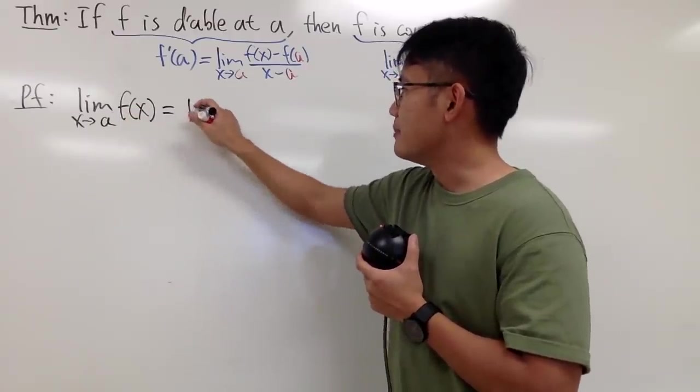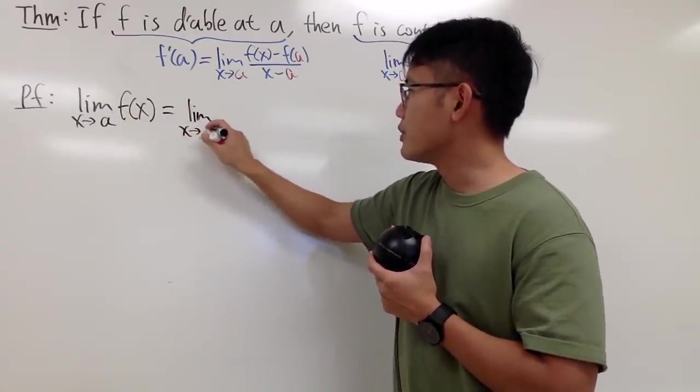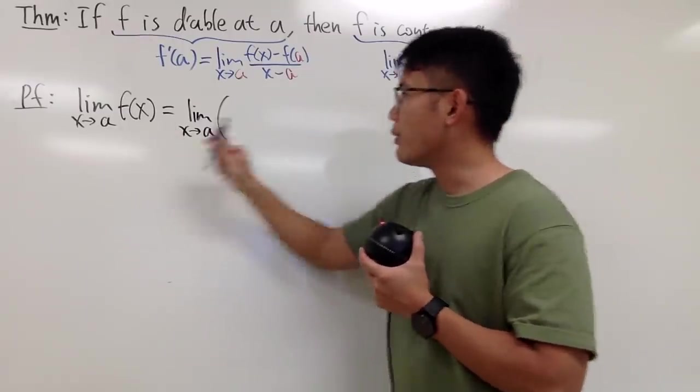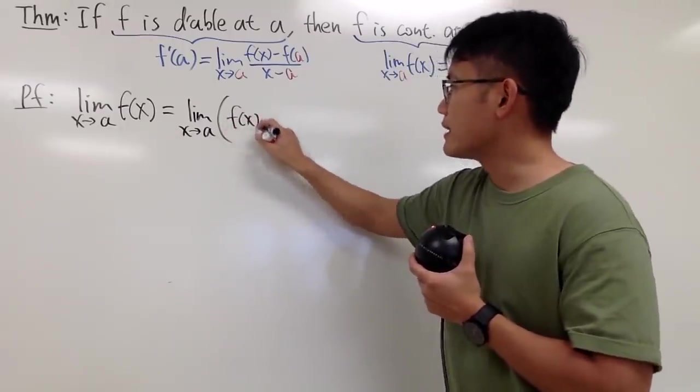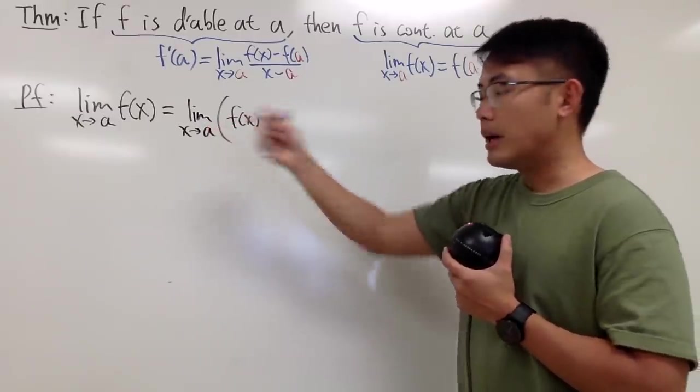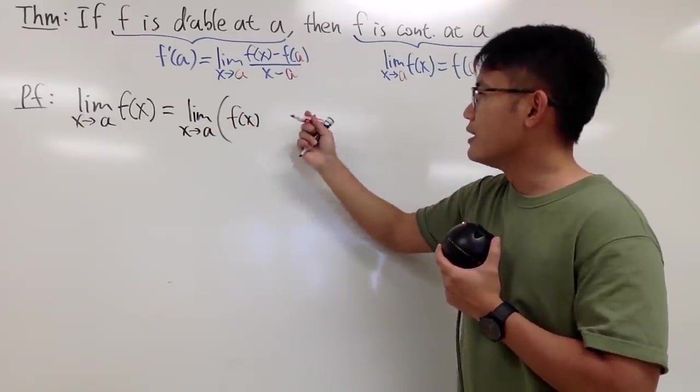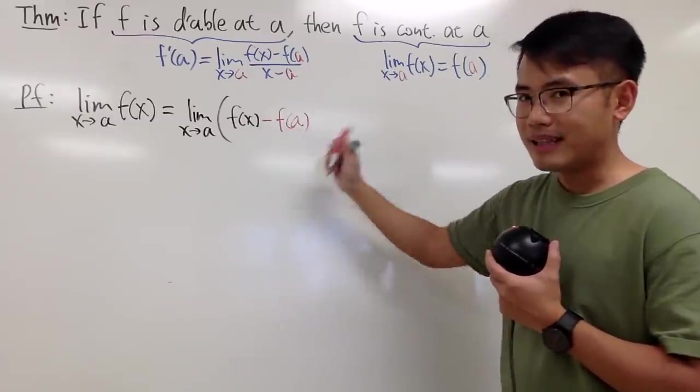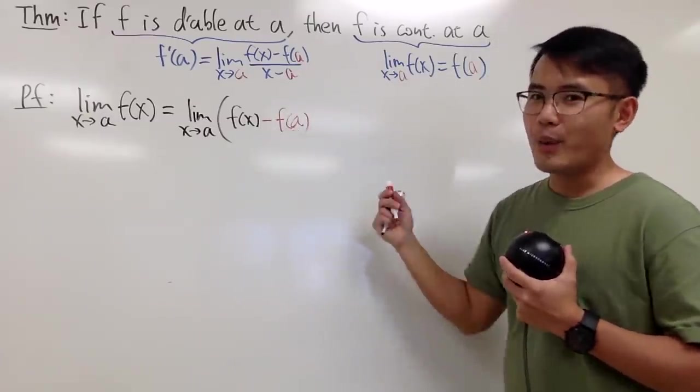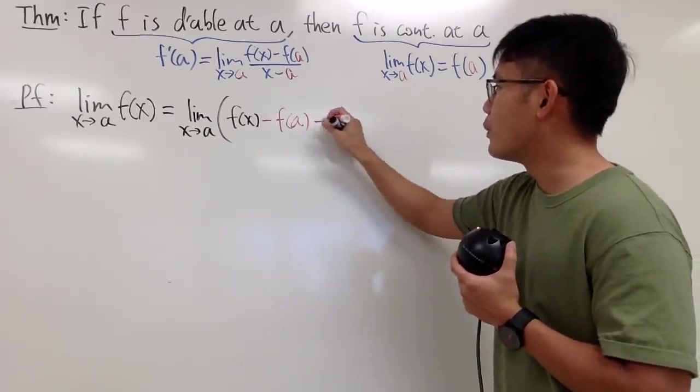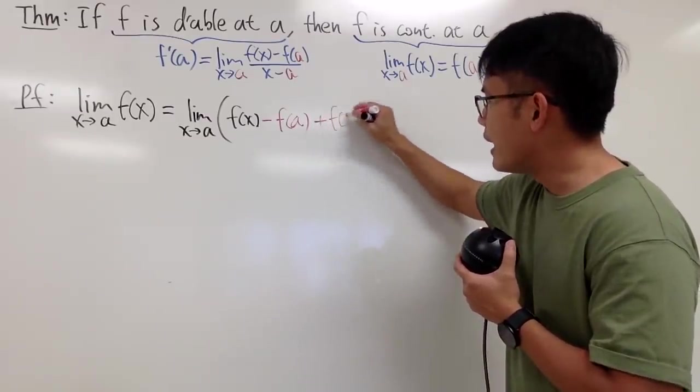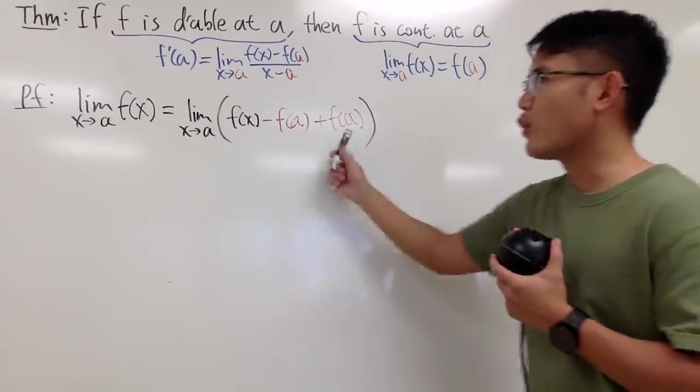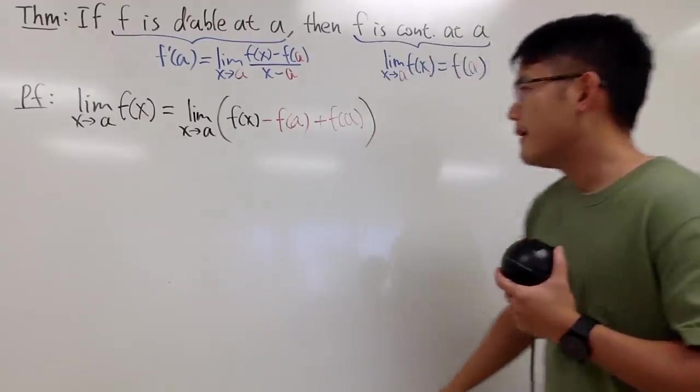First, I will still write this down as the limit as x approaching a. And let's open a big parenthesis. Inside here, I will first write down f of x. Nothing new. But now, I want to invite this guy here. So let me just minus f of a. But as I said earlier, I cannot just take away without giving back. So I will just add f of a immediately, like this. So of course, this is still the same as that.